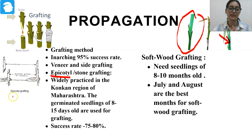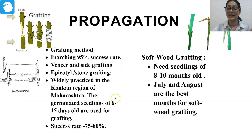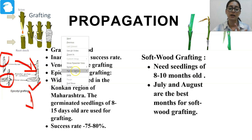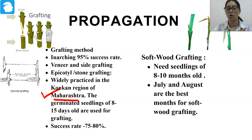When it comes to epicotyl grafting, you can see in the image — another name for this grafting is stone grafting. In stone grafting, the stone is attached. The seedling taken is 8 to 15 days after germination. In epicotyl grafting, we take the seedling with the seed — which is the stone — attached. You can see the rootstock and scion are combined and then planted in desirable places. Epicotyl grafting is basically practiced in the Konkan region of Maharashtra. The success rate for epicotyl grafting is around 75 to 80%.